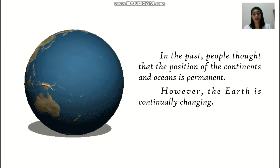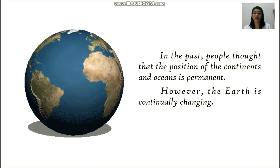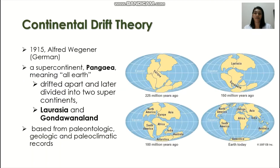In the past, people thought that the position of the continents and oceans is permanent. However, the Earth is continually changing as supported by different theories that we would be highlighting in this video. The first theory we have is the Continental Drift Theory, proposed by Alfred Wegener in 1915. He believed that the continents we have today started from a supercontinent called Pangaea. This theory was based on paleontologic, geologic, and paleoclimatic records. Here are some evidences used by Wegener to support his theory.